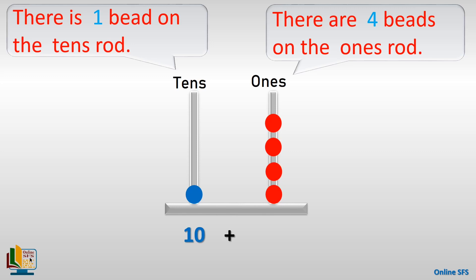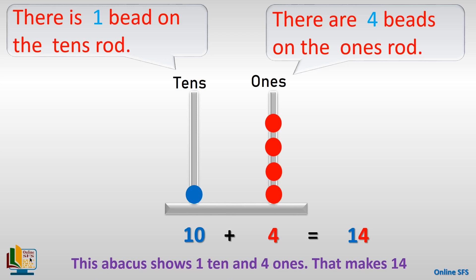So we will write ten. And we have four ones, so we will simply write four for the ones column. After adding the tens and ones — that is, ten plus four — we will get fourteen as our answer. So here the abacus shows the number fourteen.